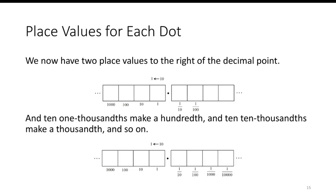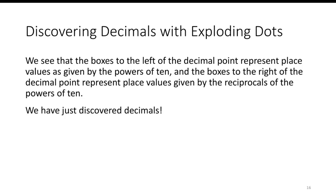So what we have here, the place values: one-tenth, one-hundredth, one-thousandth, one-ten-thousandth, one-hundred-thousandth, and so on. We see that the boxes to the left of the decimal point represent place values given by the powers of ten, and the boxes to the right of the decimal point represent place values given by the reciprocals of the powers of ten. We have just discovered decimals.